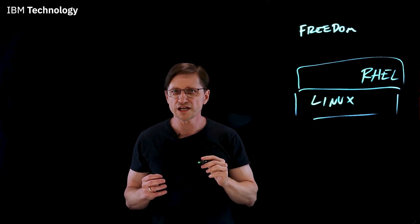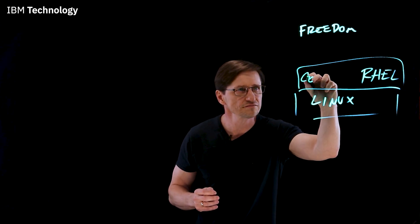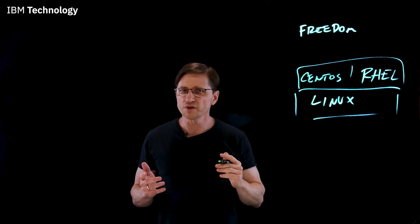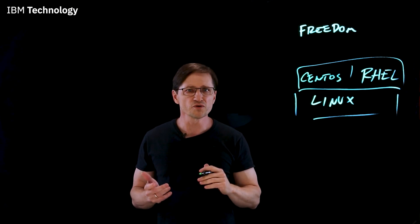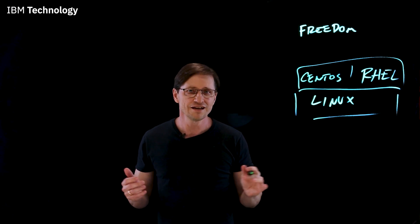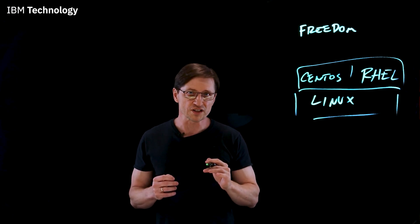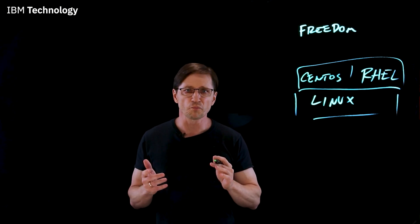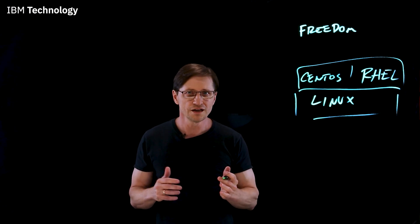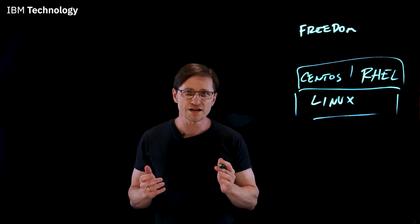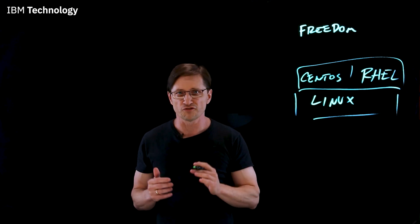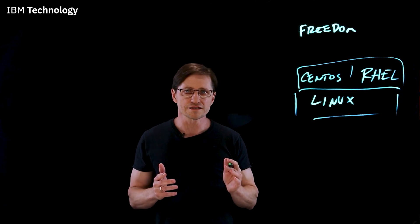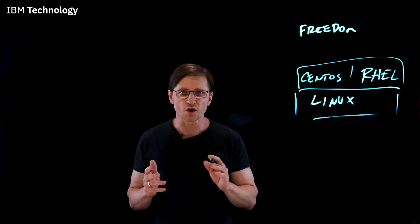RHEL has an open source counterpart called CentOS — it's the free version of RHEL. So why did Red Hat donate the CentOS source code to an open source community? It's not about charity. Like a lot of for-profit companies, they've worked out a win-win situation. On one hand, the company gets help building and improving the base of their commercial product. On the other, open source devs get commercial-grade code at no cost and the freedom to extend it.